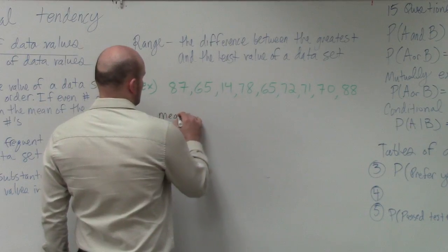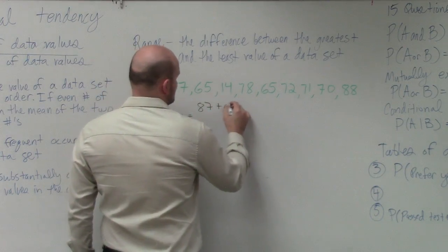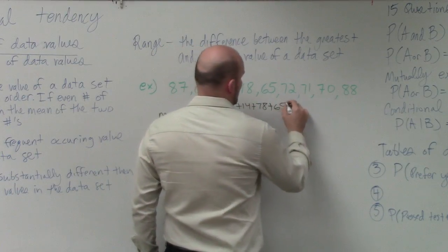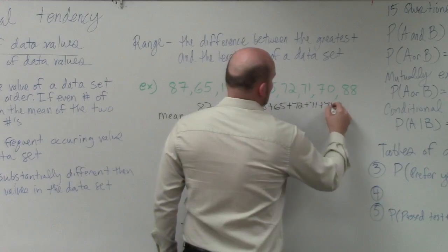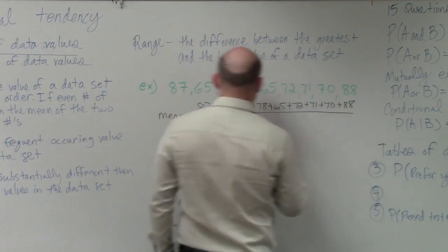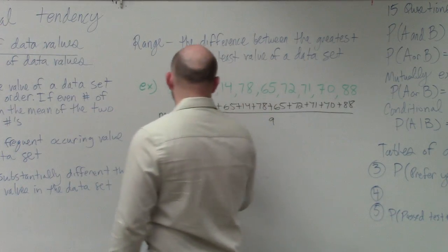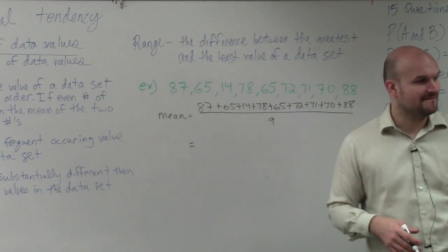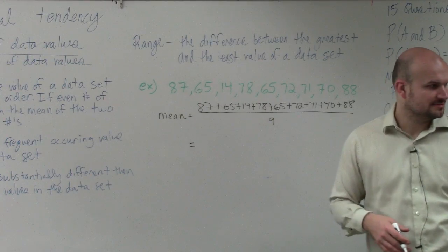So the mean is equal to 87 plus 65 plus 14 plus 78 plus 65 plus 72 plus 71 plus 70 plus 88, and then we need to divide that by how many data values we have, which is nine. So when we use our calculator, we get 610.